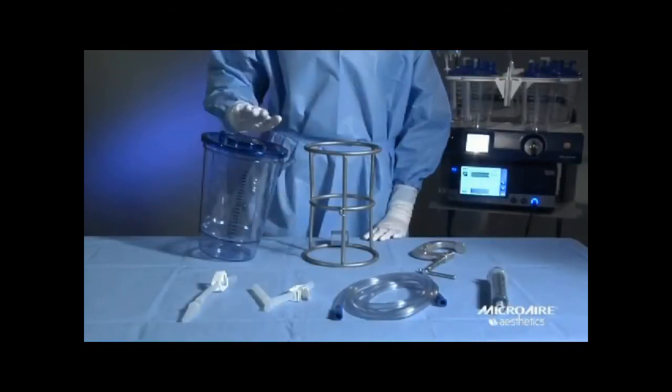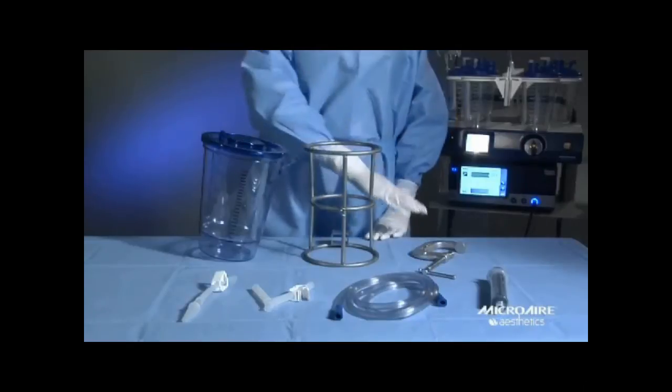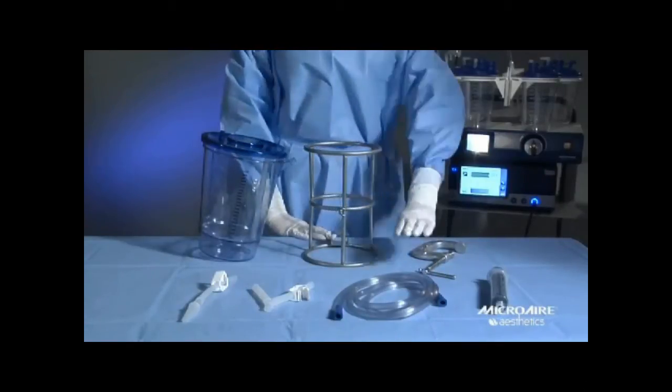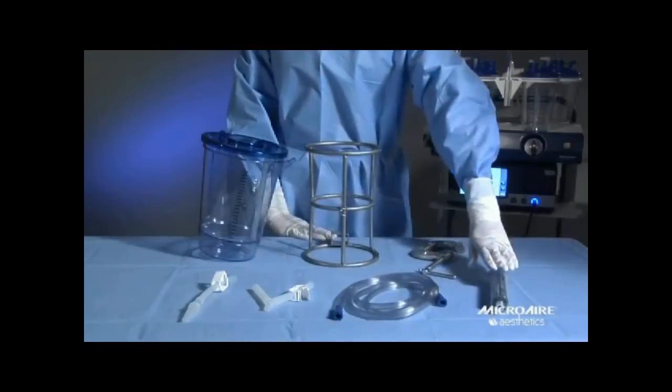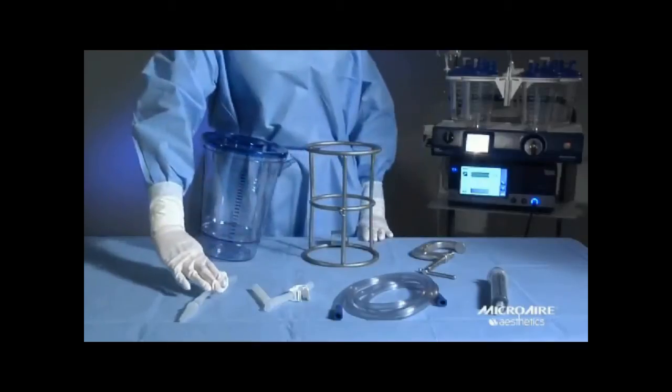To get started you will need the lipo filter harvest canister, a stainless steel stand and clamp. Inside each canister box you will find sterile transition tubing, a tomy syringe, the fat evacuation tube, and the vacuum manifold.